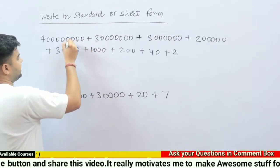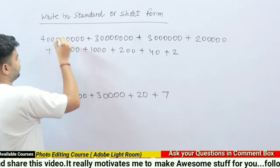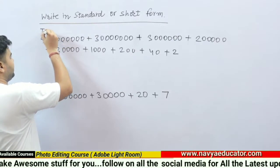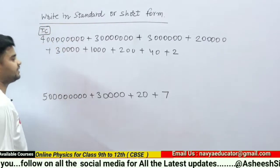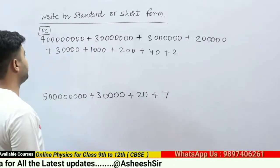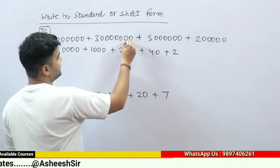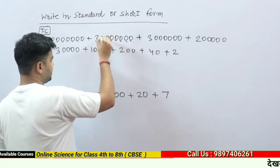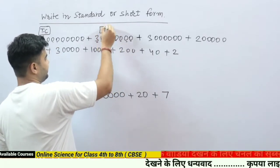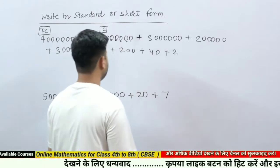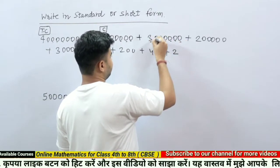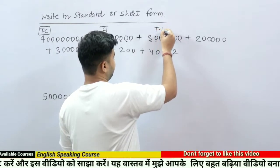Counting the places: ones, tens, hundreds, thousands, ten thousands, lakh, ten lakh, crore, ten crore. So the place value of 4 is ten crore. Similarly, counting the next number: ones, tens, hundreds, thousands, ten thousands, lakh, ten lakh, crore — so its place value is crore. The next number's place value is ten lakh.